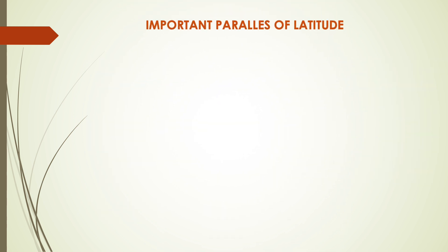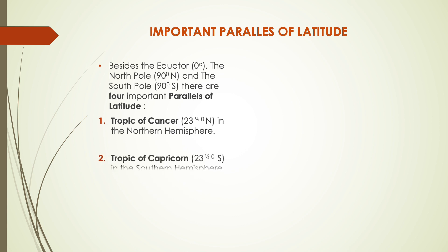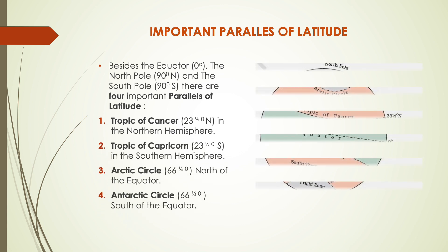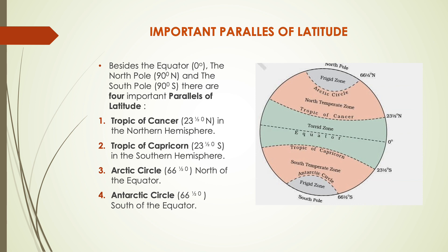Now we will talk about some important parallels of latitude. Besides the equator, the north pole, and the south pole, there are four important parallels of latitude. They are: the Tropic of Cancer, which lies in the northern hemisphere at 23.5 degrees; the Tropic of Capricorn, which lies in the southern hemisphere at 23.5 degrees; and the Arctic Circle, which is north of the equator at 66.5 degrees.